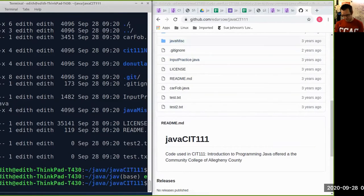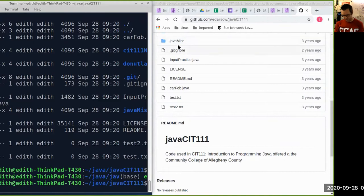So you'll see, look, CIT 111 net beans, CIT 111 net beans, donut land, donut land.